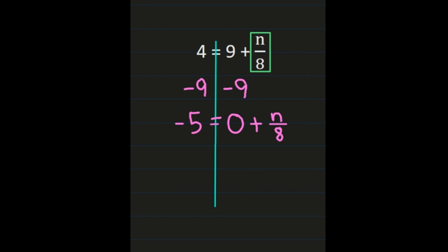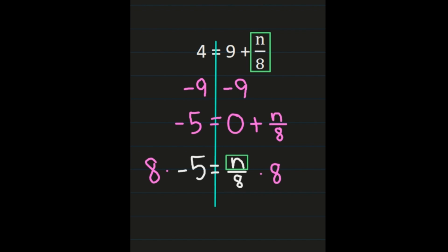Simplifying, we get negative 5 equals n over 8 — a one-step equation. Now we're ready to isolate n. Box the n to see what you're isolating. We have n divided by 8, so the inverse is to multiply by 8 on both sides. On the right, the 8s simplify out, leaving just n. On the left, 8 times negative 5 — a positive times a negative is a negative — and 8 times 5 is 40, so we get negative 40 equals n.